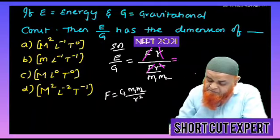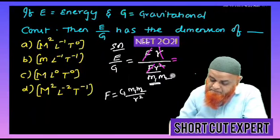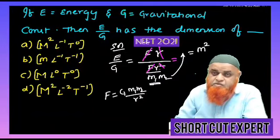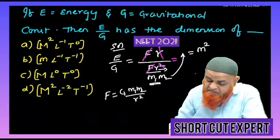So therefore what is left here now. This M1 M2 is left. This M1 M2 comes to the numerator. It is going to become M square. And what is left? One R is left here.